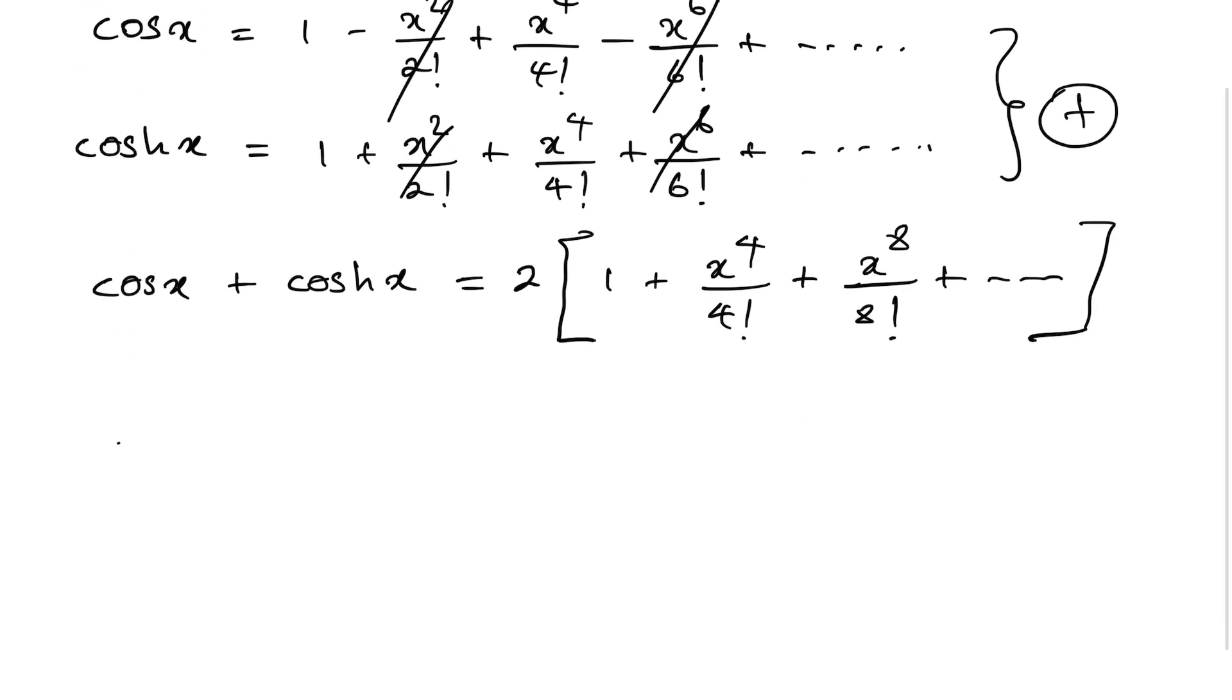Now we know here cosine of x plus hyperbolic cosine of x is equal to 2 times, we can represent this series by using sigma notation 0 to infinity x to the 4 times n over 4 times n factorial.